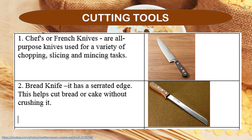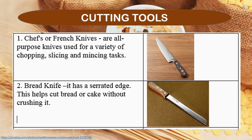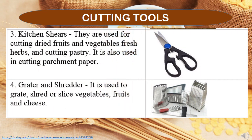Cutting Tools: Chef knives or French knives are all-purpose knives used for a variety of chopping, slicing, and mincing tasks. Bread knives have a serrated edge, which helps cut bread or cake without crushing it. Kitchen shears are used for cutting dried fruits and vegetables, fresh herbs, and cutting pastry. They are also used for cutting parchment paper.